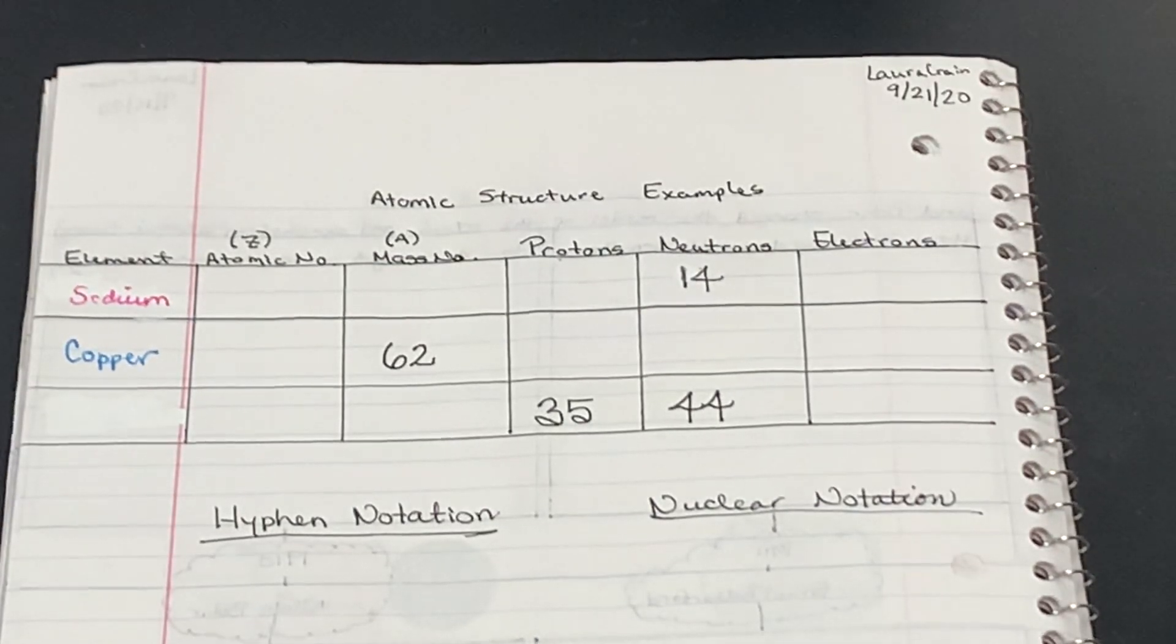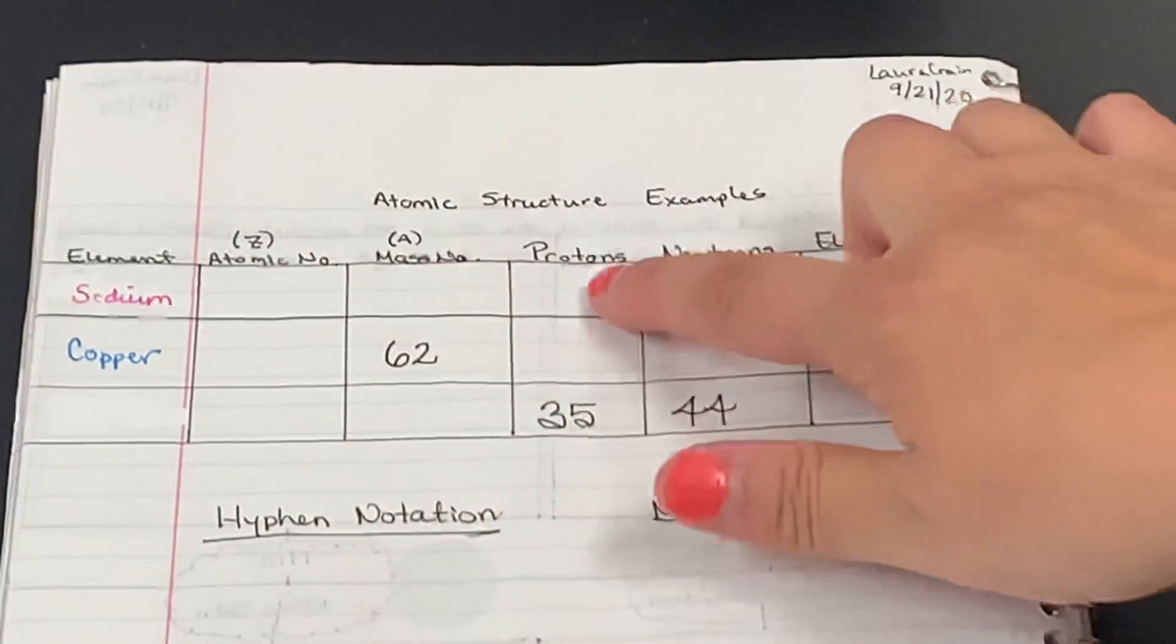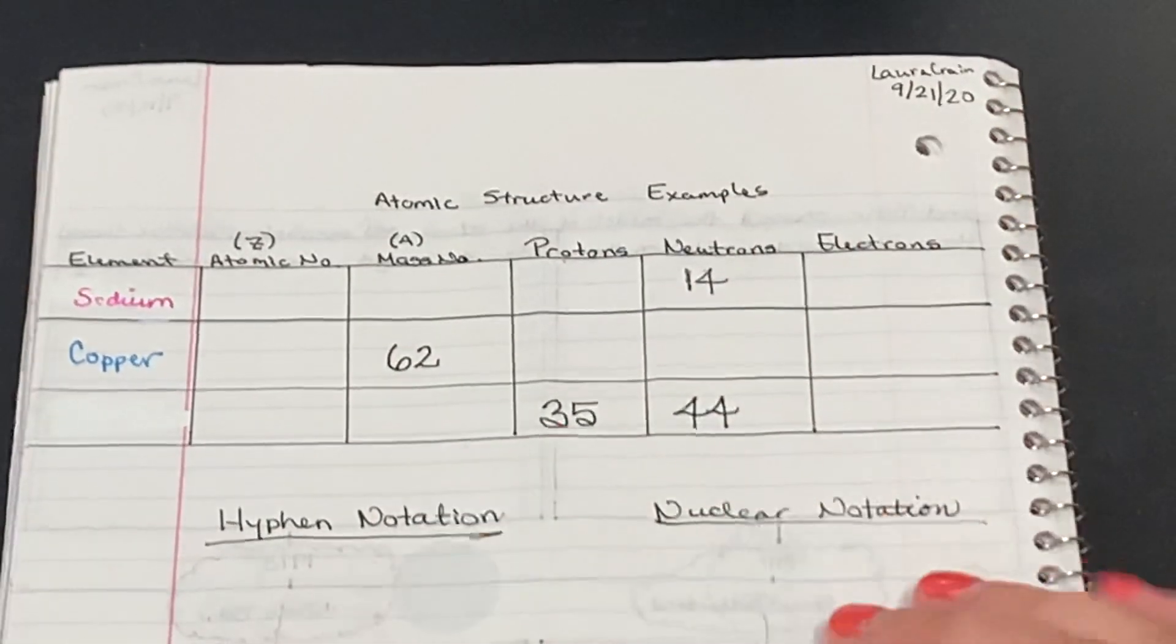Okay folks, so we're going to do some example problems on determining atomic number, mass number, protons, neutrons, electrons, and then writing our two types of notation.